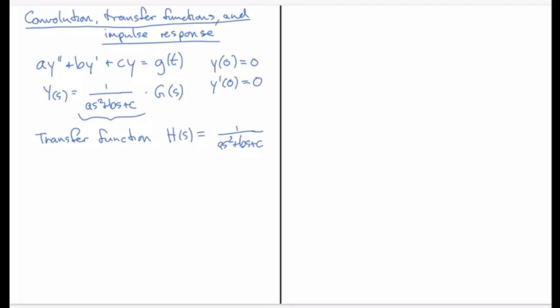And if we're able to invert capital H to get little h, then we can write down y of t and y of t will be h convolved with g evaluated at t. And that is a convenient way of solving ODE, where you end up with a product of two Laplace transforms that you can invert both.